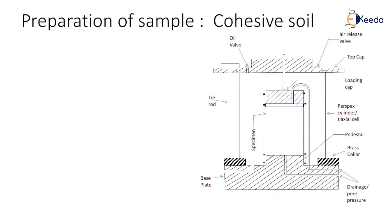Different procedures are followed for the preparation of sample for cohesive soil and cohesionless soil. For cohesive soil, there is enough attraction between soil particles, hence no additional mold is required. But in case of cohesionless soil, the soil cannot stand on its own, so a special procedure is required and a split mold is used in which the soil is compacted and then placed in the consolidation test cell.